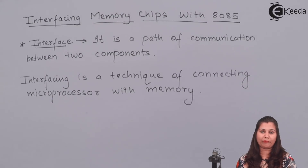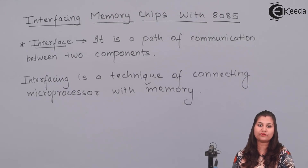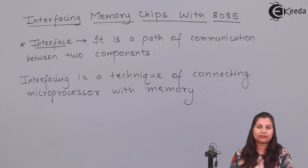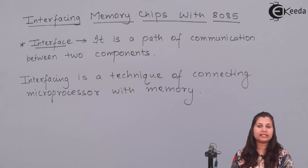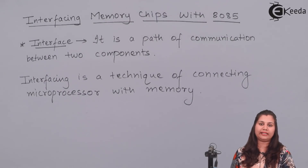Now what's the need of this interfacing? When the microprocessor is executing an instruction, it needs to access the memory for reading or writing data, or for reading the instruction codes written in the memory. So some path should be available for the flow of data between the memory and the microprocessor, and this path is provided by the interfacing circuit.